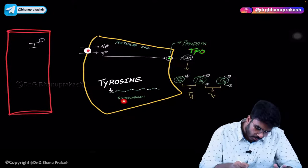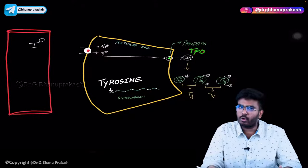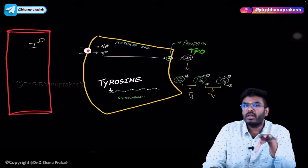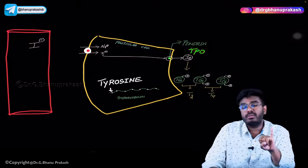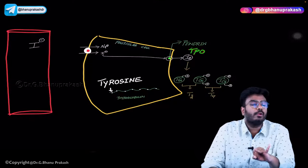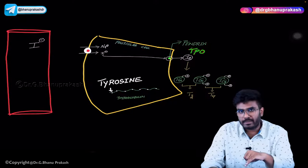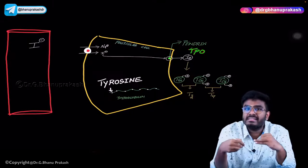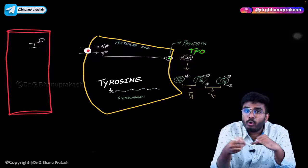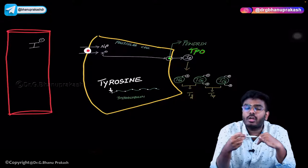This thyroglobulin protein will also come into the colloid. In the colloid, iodine molecules are there along with thyroglobulin. Now we have to mix the iodine with the thyroglobulin — take this inorganic iodine, which is an element, and fuse it with the protein.